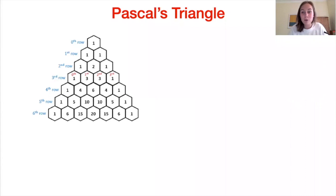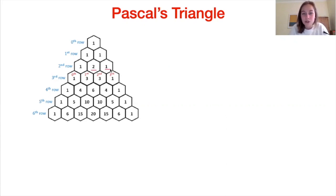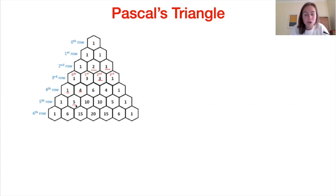Let's first talk about Pascal's triangle, which you can see right here. I'm sure a lot of you recognize Pascal's triangle, but let's remind ourselves what the numbers actually represent. We can obtain each number in Pascal's triangle by adding the two terms above it. For example, if we take 2 and 1 and add them together, we get 3, which is the number directly below. Similarly, 1 and 4 give us 5, the number directly below.